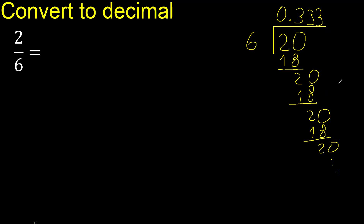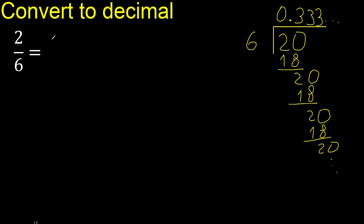Therefore it repeats. The digit is 3 — it repeats. Therefore, like this: 3 repeats.